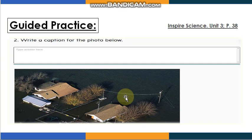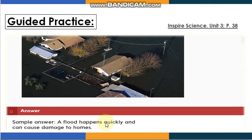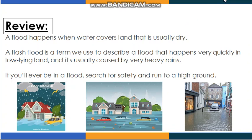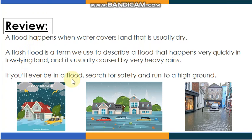A flood happens quickly and can cause damage to homes. A flood happens when water covers land that is usually dry. A flash flood is a term used to describe a flood that happens very quickly in low-lying land. It is usually caused by very heavy rains.